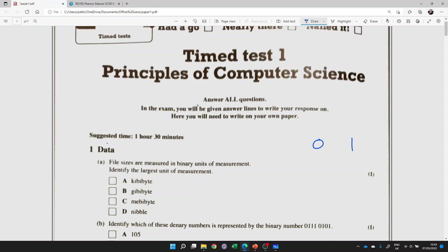If we think the smallest unit of measurement is an individual bit, here I've got two bits. If I have four bits, that's going to be a nibble. So a nibble will be the smallest, and we want the largest.